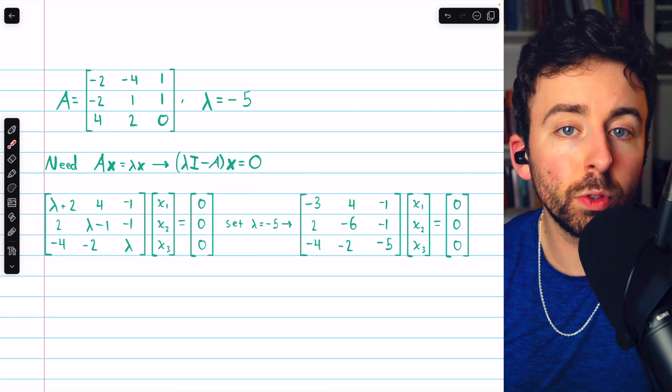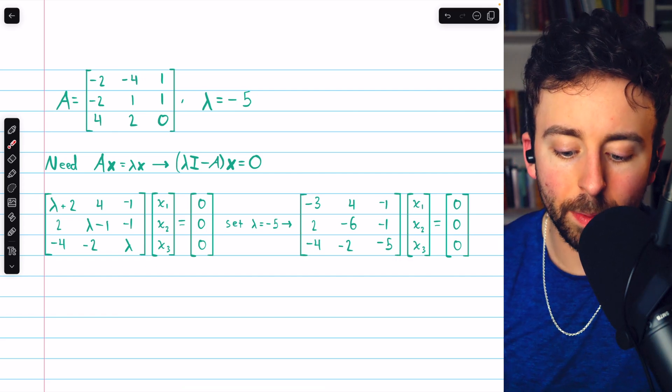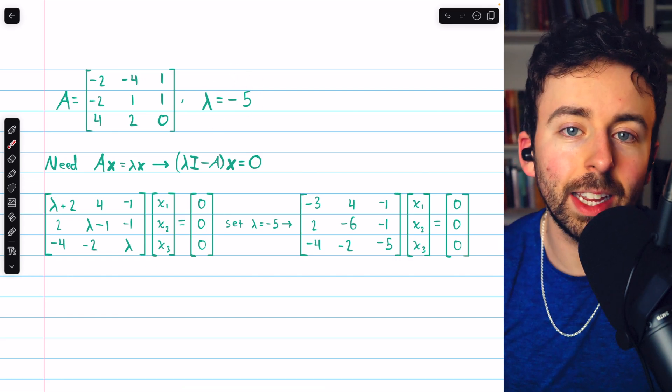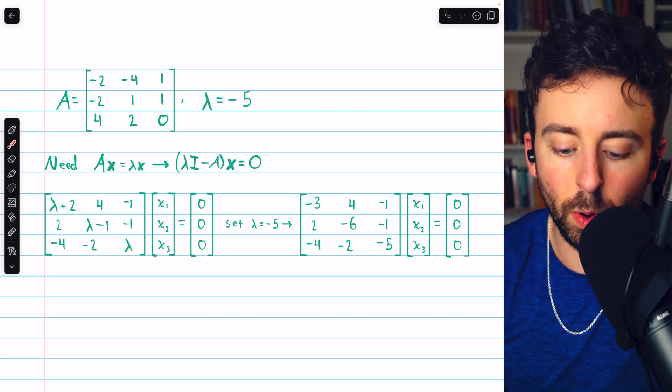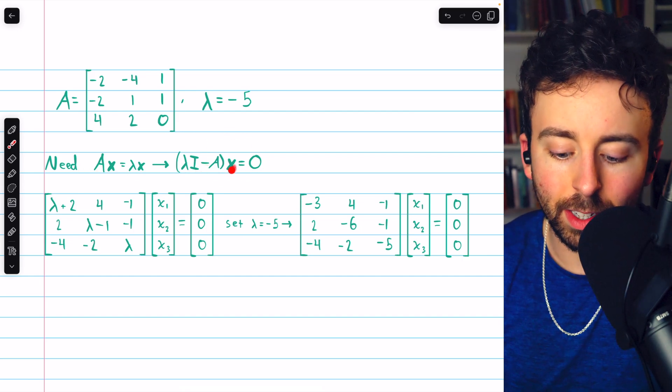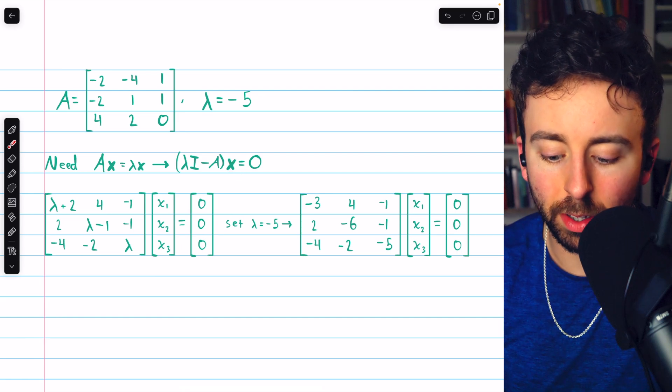Next, here's a three by three example, which will proceed in very much the same way. The given eigenvalue is negative five. Again, by definition, we arrive at this same equation, lambda I minus A times the eigenvector x must equal zero.